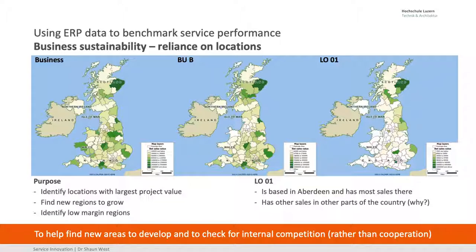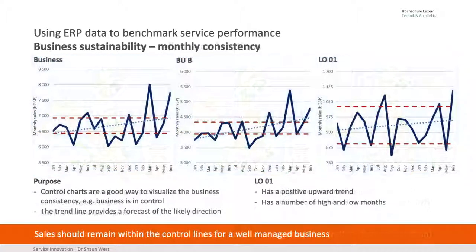With Excel you can do overlays so you can actually see where the locations come from. Location one has good sales but it's also got a lot of sales in other regions — why? So you need to go down to a regional basis; that's where postcodes are very helpful. Control plots: are we going up and increasing, following the line we expected? What I'm looking for is some sort of consistency in the business. I also want sales to remain within the control lines — a very slow, boring corridor that we're following.